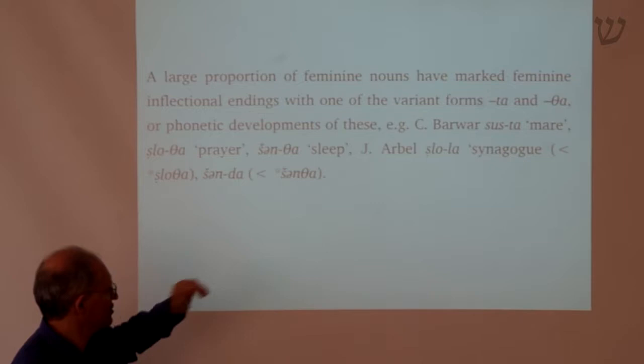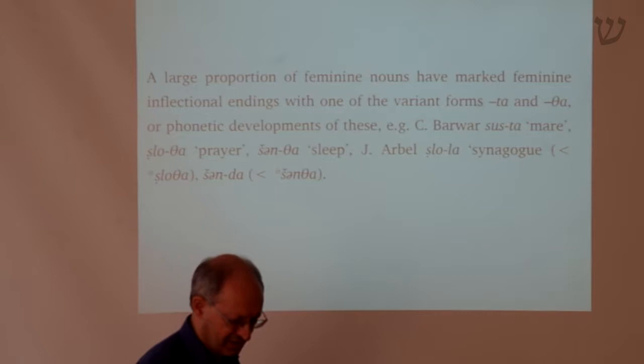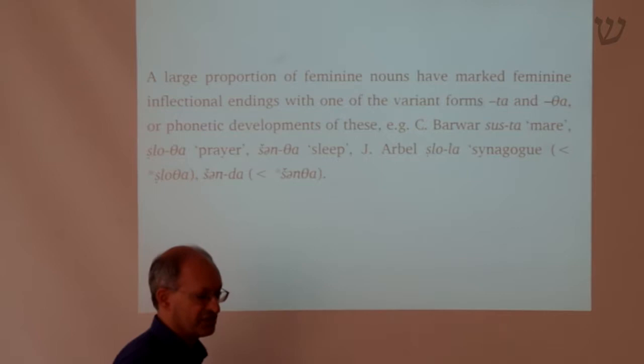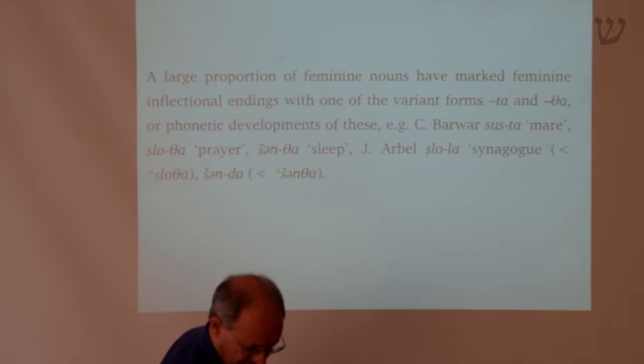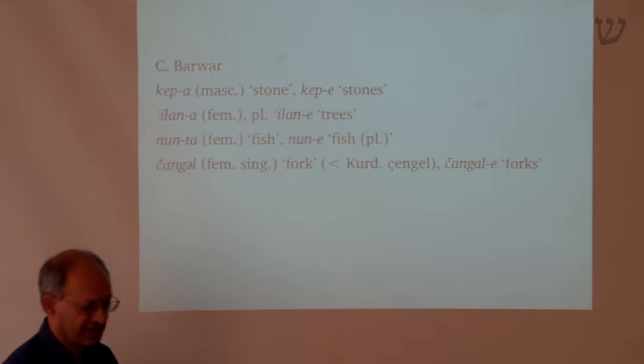Another strategy is to turn the 'tha' into a 'd' in the trans-Zab dialects — 'shinda' from 'shintha'. This is a technique of eliminating the interdental. In fact, the process of development of 'tha' to 'L' probably goes through an intermediate stage of 'd' — that seems to be the intermediate stage of development.